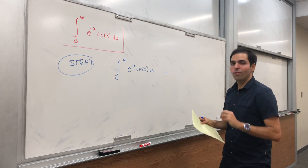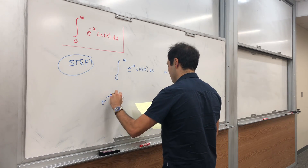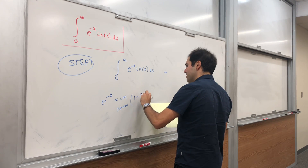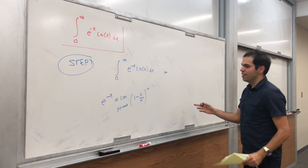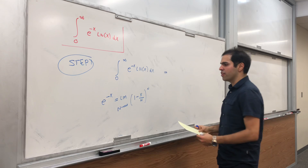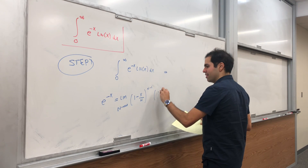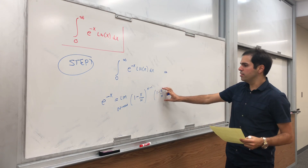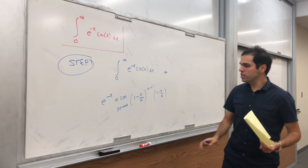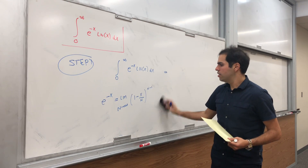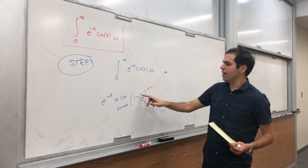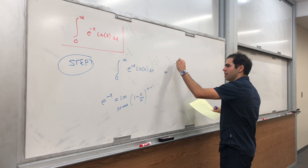So e to the minus x — remember, that's equal to the limit as n goes to infinity of (1 minus x over n) to the n. And using one of those factors of (1 minus x over n) doesn't really matter, so it's really the same as this limit. As n goes to infinity, that one term goes to 1, so it doesn't matter. So particularly, e to the minus x equals the limit as n goes to infinity of (1 minus x over n) to the n minus 1.